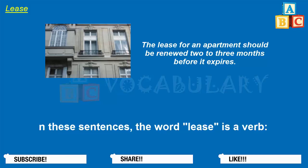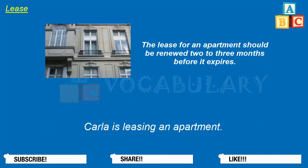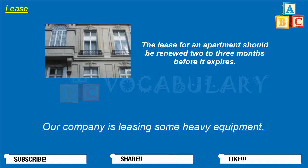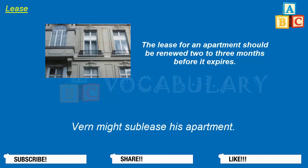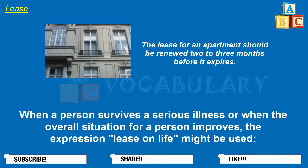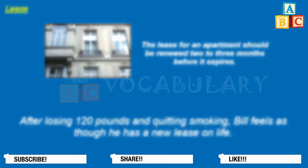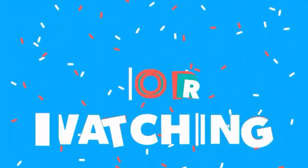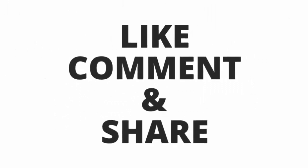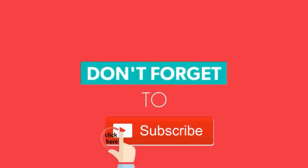The word lease is also used as a verb. Carla is leasing an apartment. Tony leased a new Chevy Volt. Our company is leasing some heavy equipment. Vern might sublease his apartment. When a person survives a serious illness or when the overall situation for a person improves, the expression 'lease on life' might be used. After losing 120 pounds and quitting smoking, Bill feels as though he has a new lease on life.